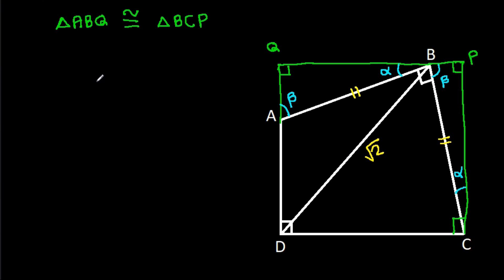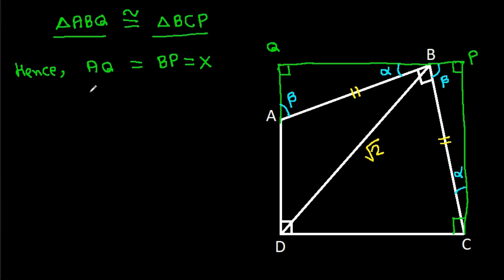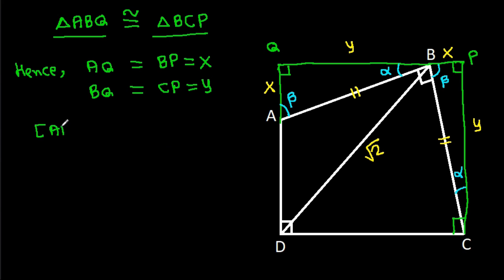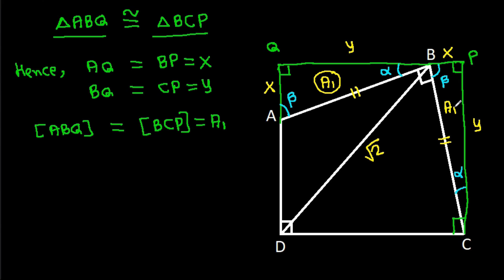These two triangles are congruent. Hence AQ is equal to BP — suppose X — and BQ is equal to CP — suppose Y. So AQ is X, BP is X, BQ is Y, and CP is Y. Also, area of ABQ equals area of BCP — suppose A1. This area is A1 and this area is A1.